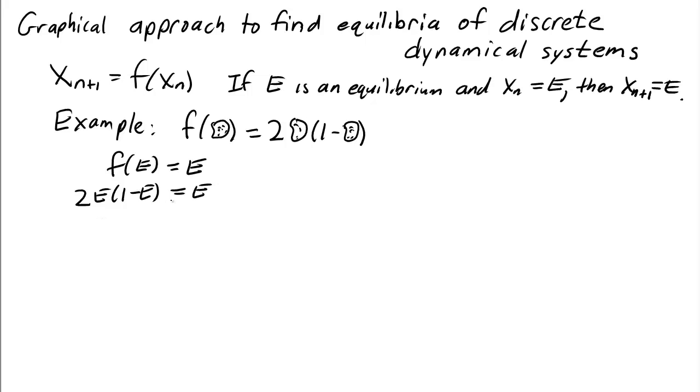If you multiply this out and subtract E from both sides, you'll get 2E - 2E² - E = 0, or E - 2E² = 0, which we can factor into E(1 - 2E) = 0.